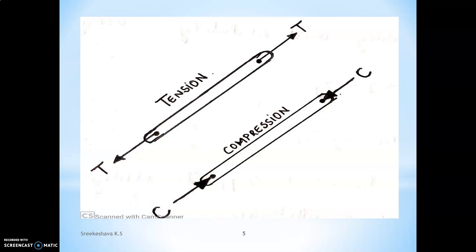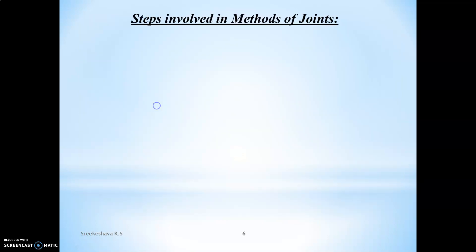Next, regarding the nature of forces in trusses: trusses are subjected to only axial forces. Consider a member with joints A and B. If the forces at both joints act away from the joints, it is termed a tensile force — with reference to the joint, not the member. If the joints are subjected to inward forces or push, it is a compressive force. Pulling forces at a joint cause tension; pushing forces at a joint cause compression. Please remember these two natures of forces, as they are very important when solving problems.